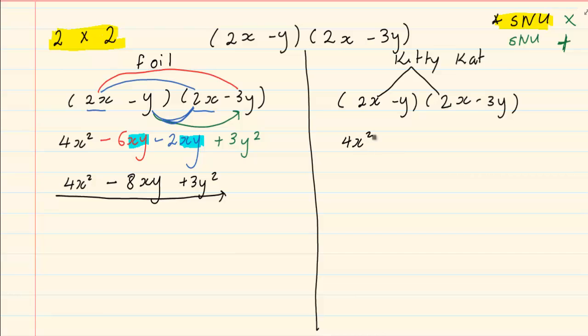What you would have called the first in the FOIL method. Then we have got minus y times minus 3y which gives us positive 3y squared. Remember at all times I am using signs, numbers and unknowns.